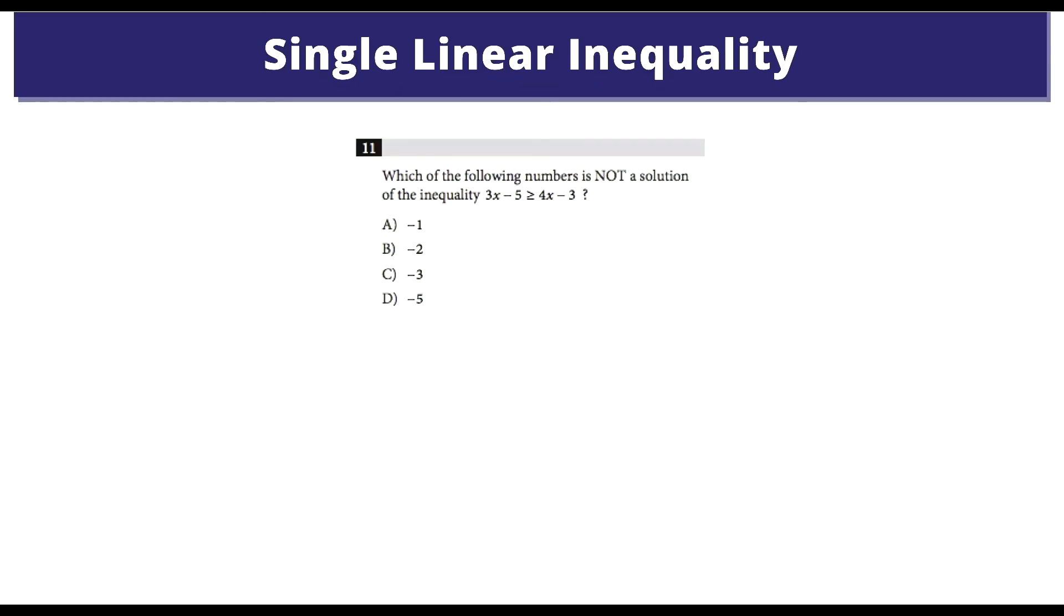Which of the following numbers is not a solution for the inequality? Let's plug in the first one, negative one. So we have 3 times negative 1 minus 5 is greater than or equal to 4 times negative 1 minus 3. Let's plug this in: negative 3, negative 5, 4, negative 1, negative 3.